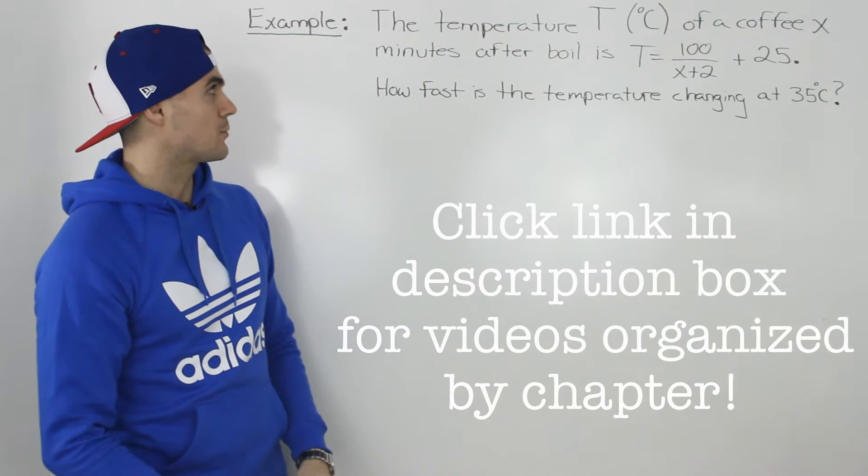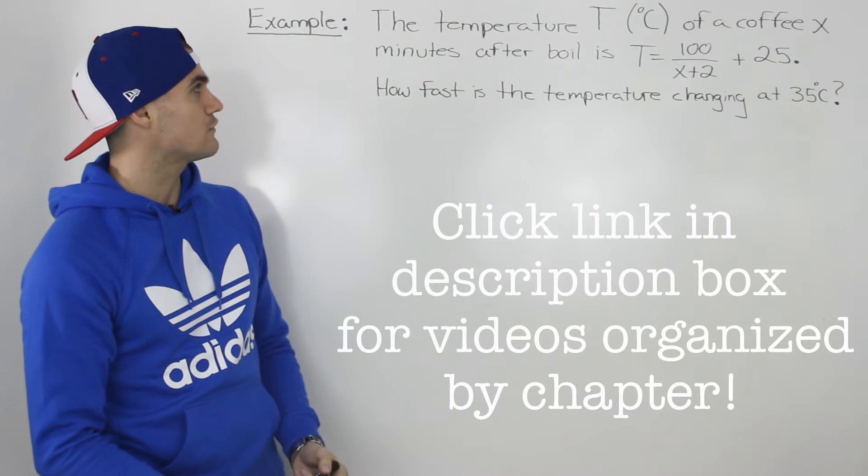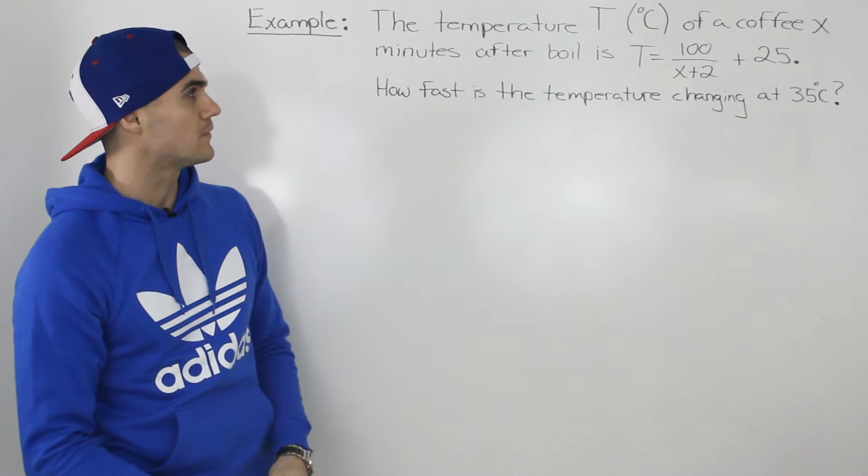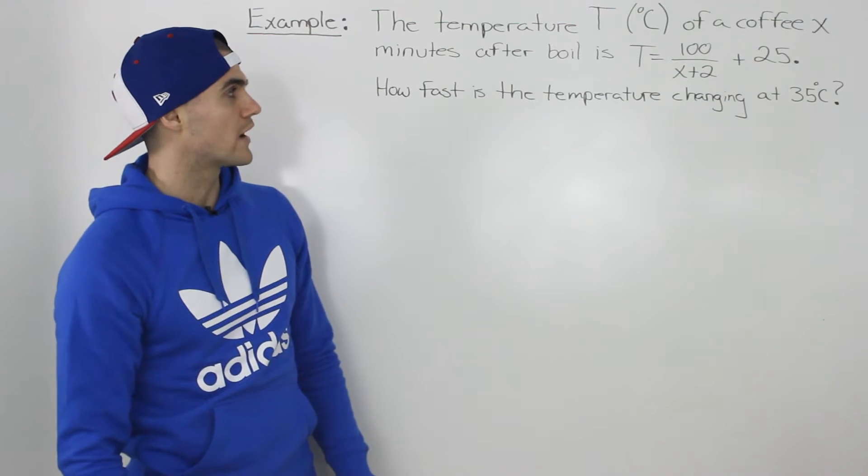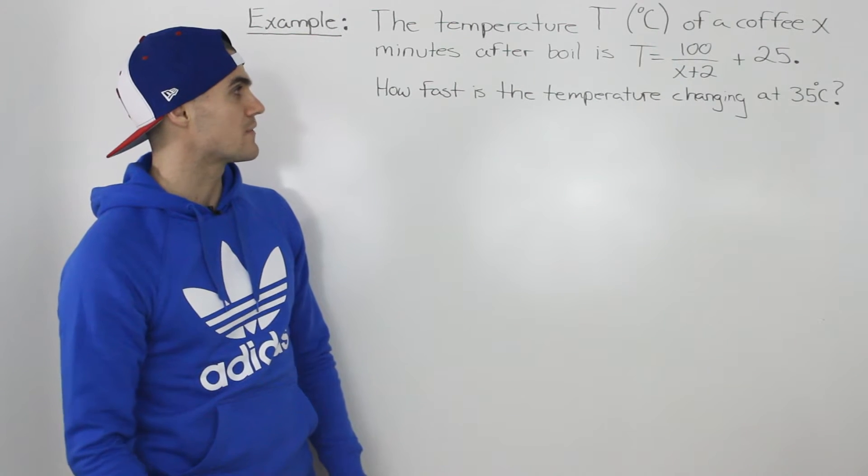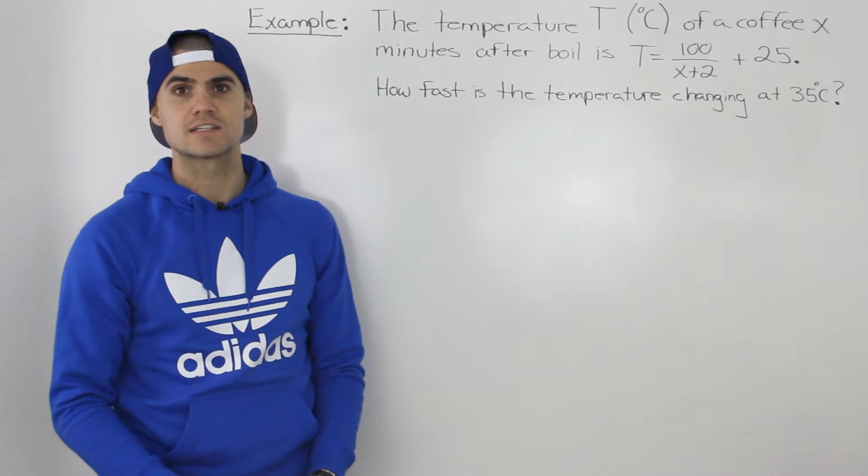Moving on to the next rate of change example, the temperature T in degrees Celsius of a coffee x minutes after boil is modeled by T equals 100 over x plus 2 plus 25. How fast is the temperature changing at 35 degrees Celsius?